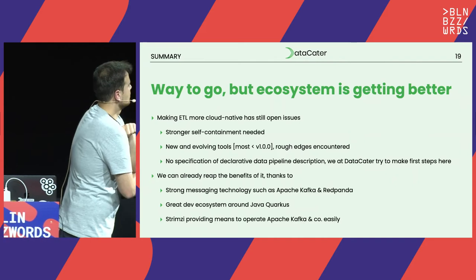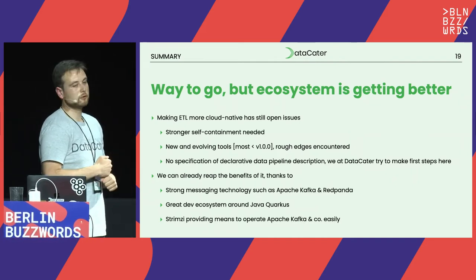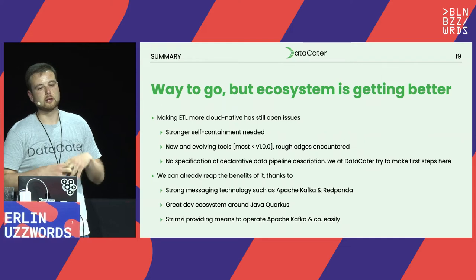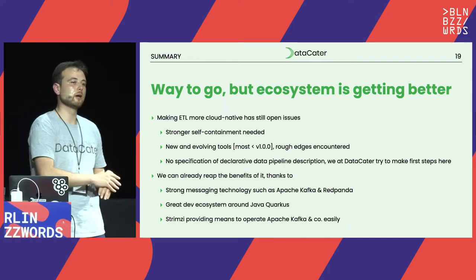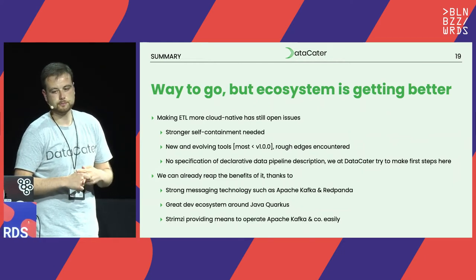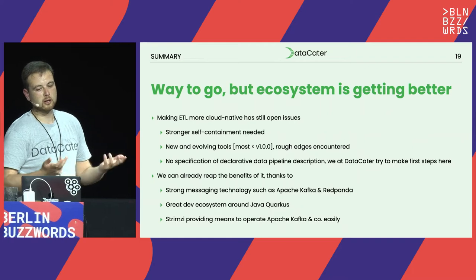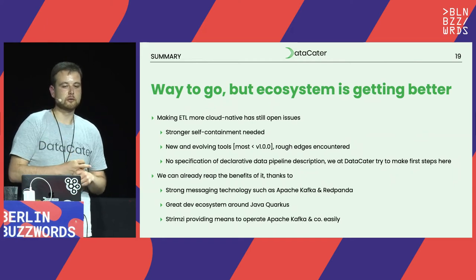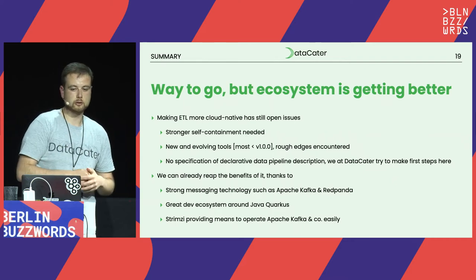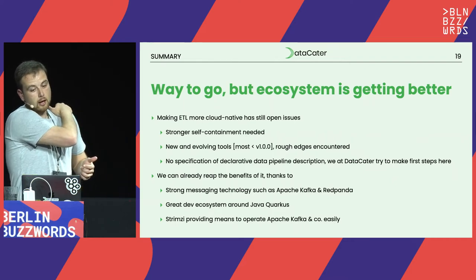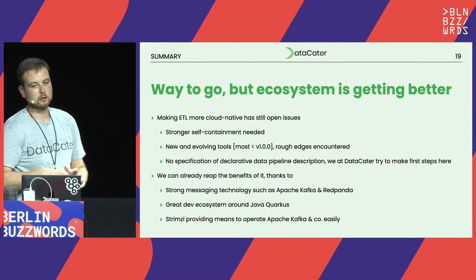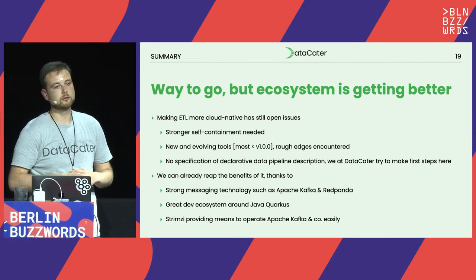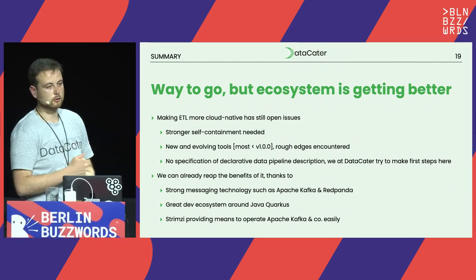What would be great in the future is to have a sense of what a declarative data pipeline would be. We have our implementation and there are others implementing it differently, but I think there is a place — like the Kafka API — to say this is the way we should declare filters and transformations on data. What we can do already is reap the benefits, thanks to the guys behind Apache Kafka and Red Panda. We have a great dev ecosystem around Java, Quarkus, and especially MicroProfile and SmallRye doing a great job with messaging and streaming. Usually this talk includes a run-through of Strimzi, which allows you to quite easily operate Kafka and Kafka Connect clusters on top of Kubernetes.